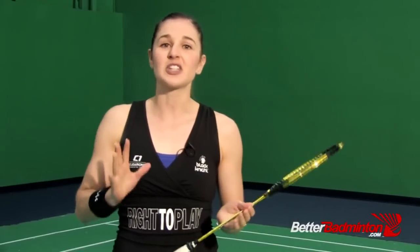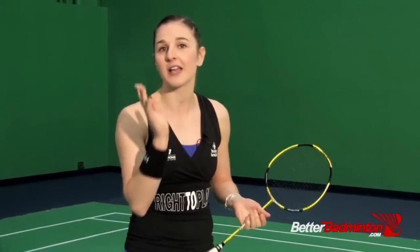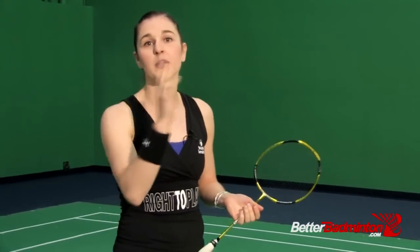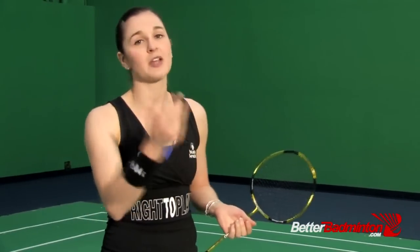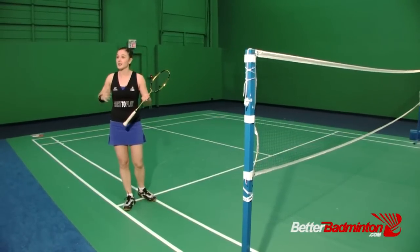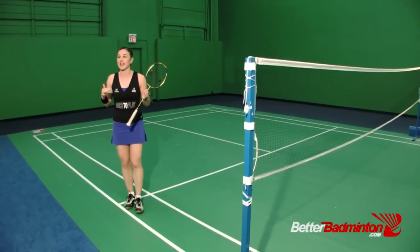It's much easier to be consistent at a slower level. You can imagine, just like if you're playing back and forth very slowly with your friend, then you're probably not going to be making very many errors. But as soon as you push the speed in your shots and your movement, that's where it starts to get shaky.